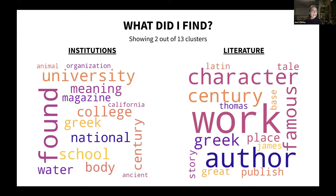And here are two more clusters, which are maybe not as clear cut. On the left, I decided to name this one "institution": organization, university, college — but I'm not so sure what to do about water or animal. And on the right, I have literature. Clearly work, author, and publish are very connected in that sense, but maybe don't know what to do so much with "James", for example.